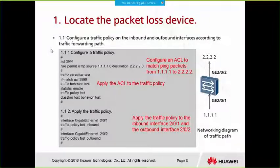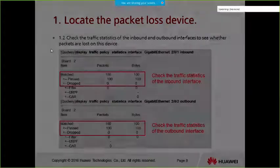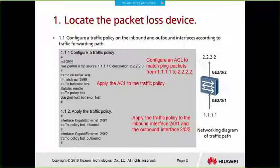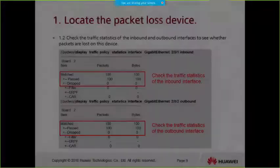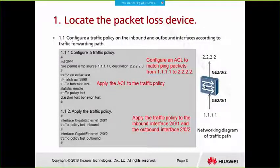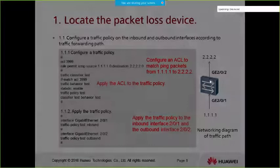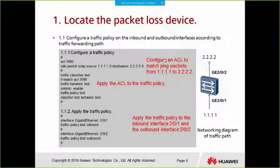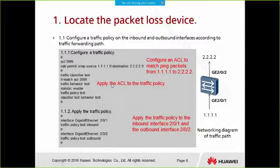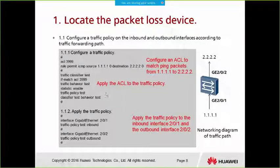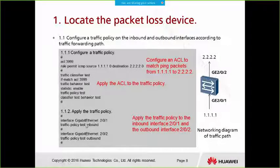To locate the packet loss device, we can configure a traffic policy on the inbound and outbound interfaces. For example, configure an ACL to match packets from a source such as 1.1.1.1 to destination 2.2.2.2, then apply the ACL to a traffic policy.